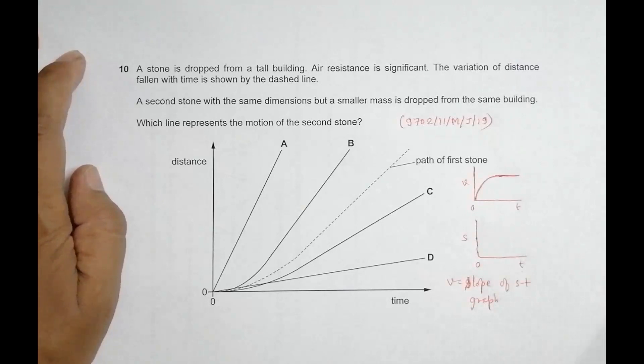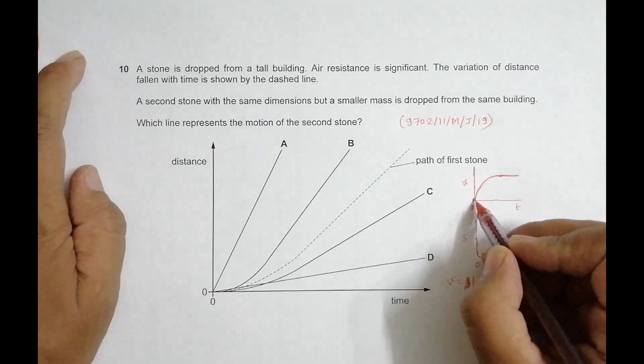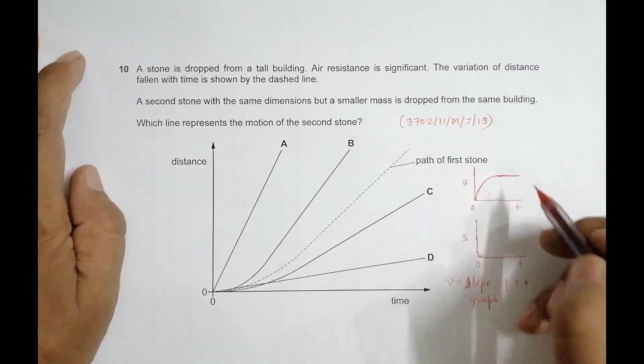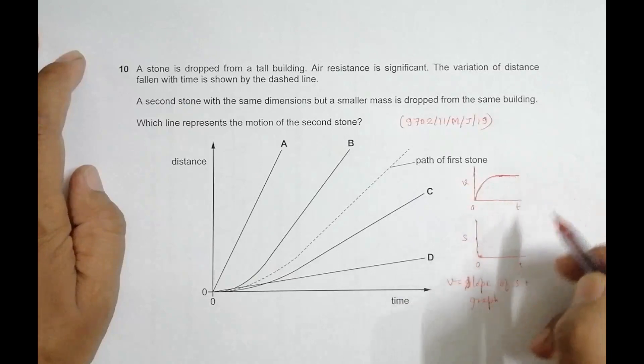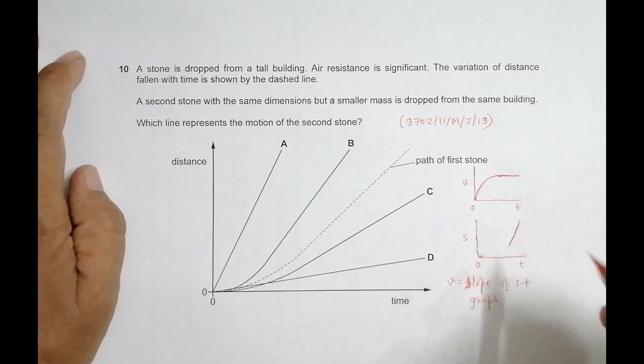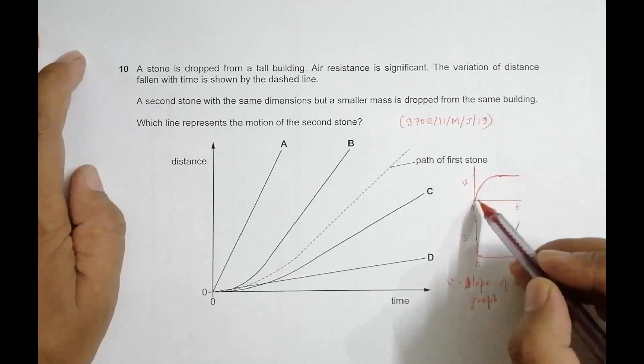Initially v is 0, so the slope of the s-t graph should be 0. Finally, v is constant, so the slope should be constant. From here to here, velocity increases, so the slope of the s-t graph should also increase.